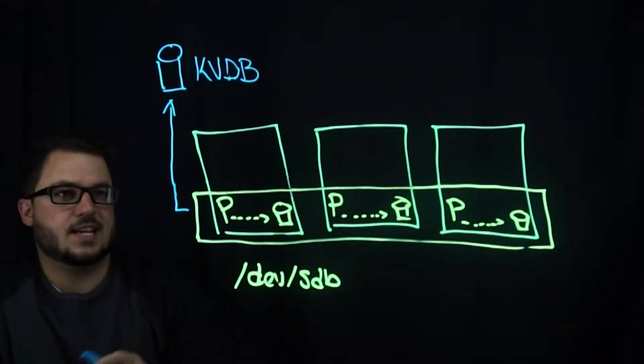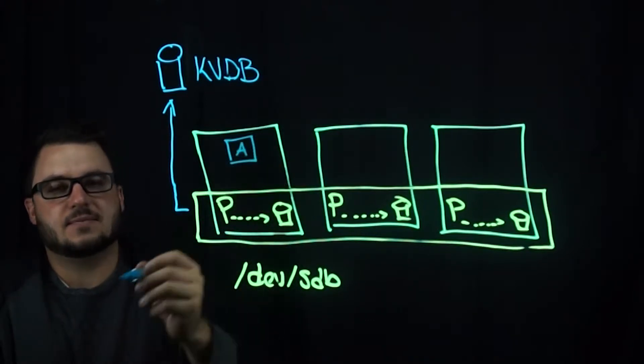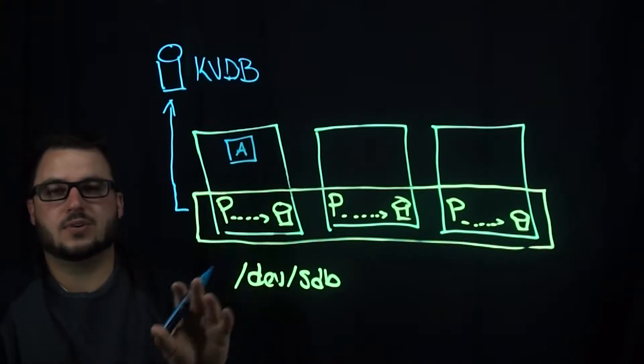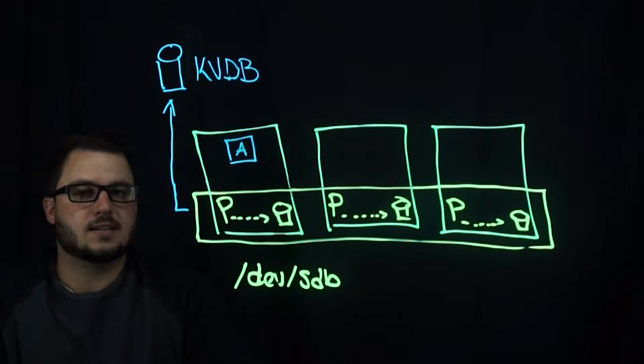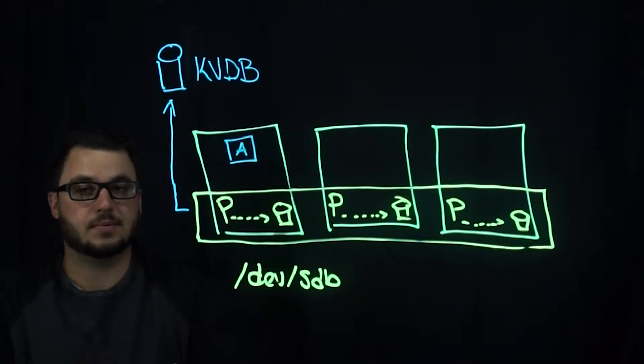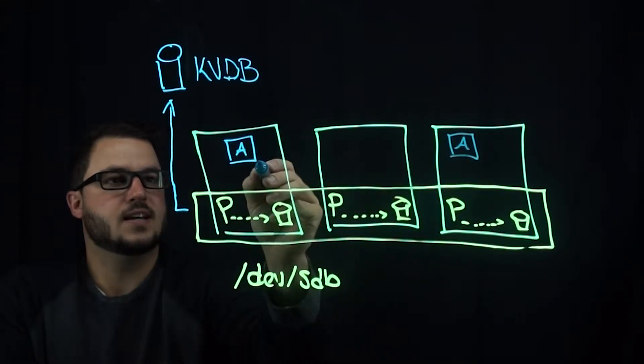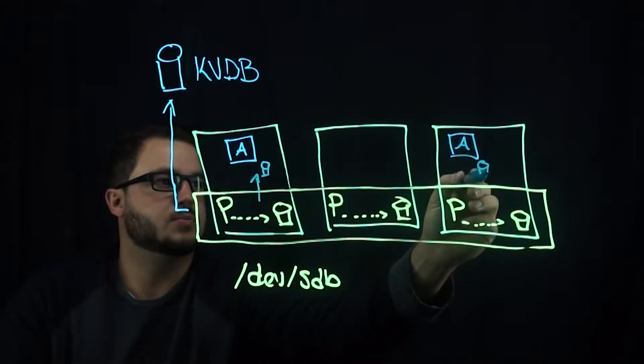Applications can run on the same nodes because Portworx allows you to run in a hyper-converged manner, meaning that the storage is also running on the same nodes as your compute applications. So we have an application on the same node here, and they provision volumes out of this globally accessible pool.